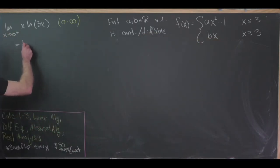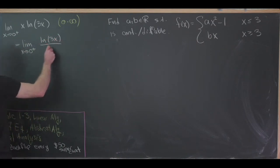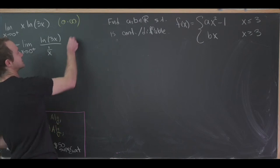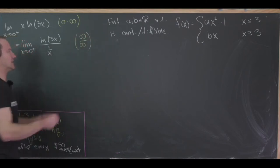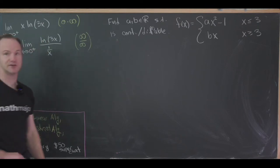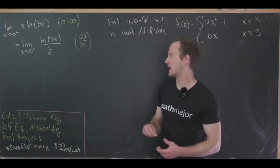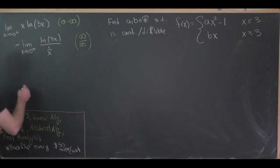So let's get to it. This will be equal to the limit as x goes to zero from above of the natural log of three times x over one over x. And now this is of the correct form — it is of the form infinity over infinity because the natural log is going to negative infinity, whereas the one over x will be going towards positive infinity, but that's okay. So now we can apply L'Hôpital's rule.